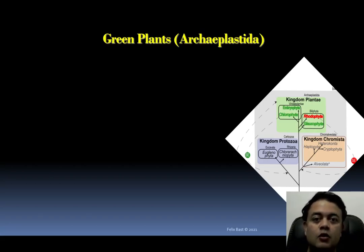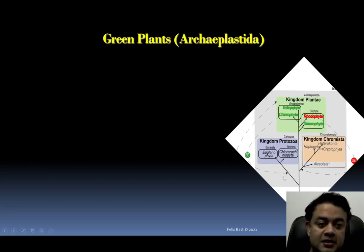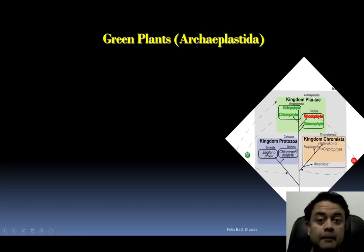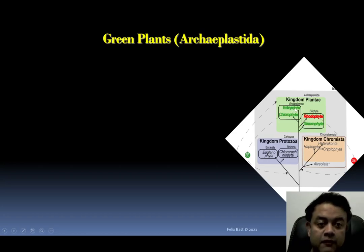The green plants of Kingdom Plantae are also called Archaeplastida — these two are synonyms. It encompasses embryophytes and chlorophytes together, collectively called Viridiplantae.